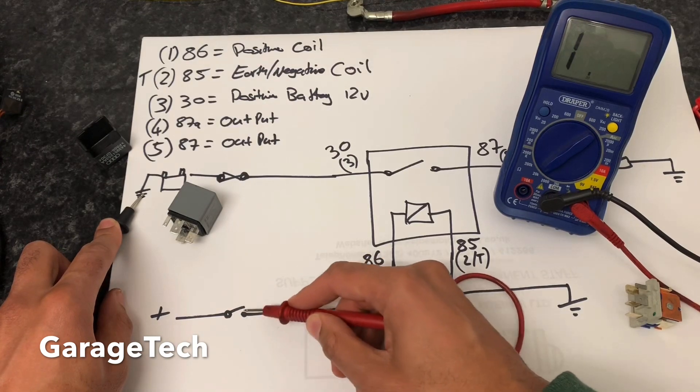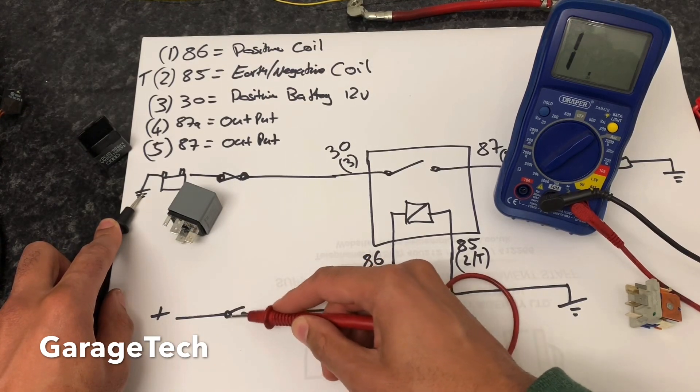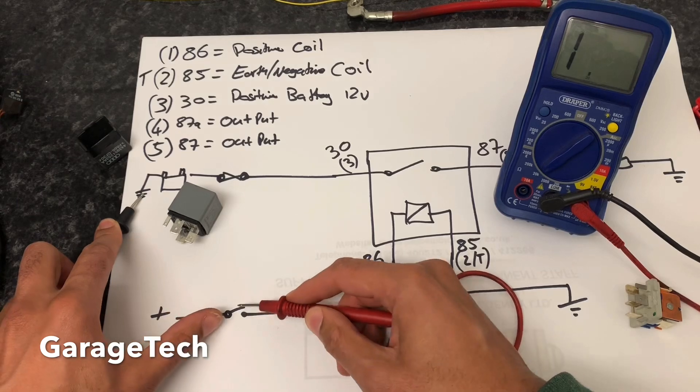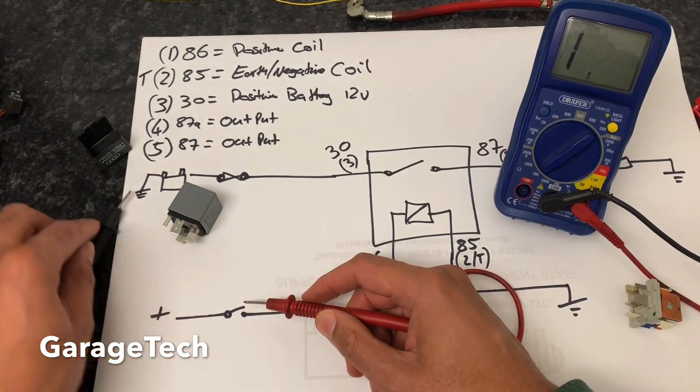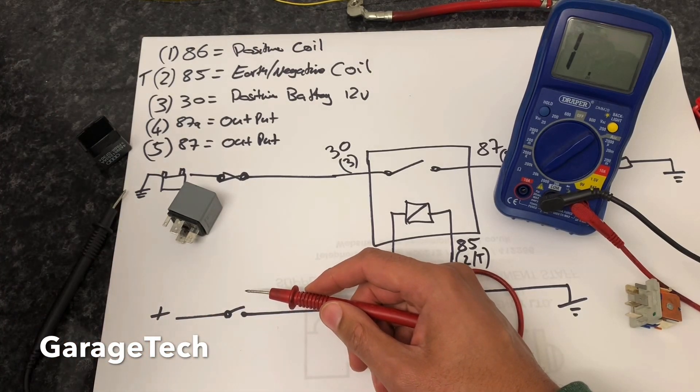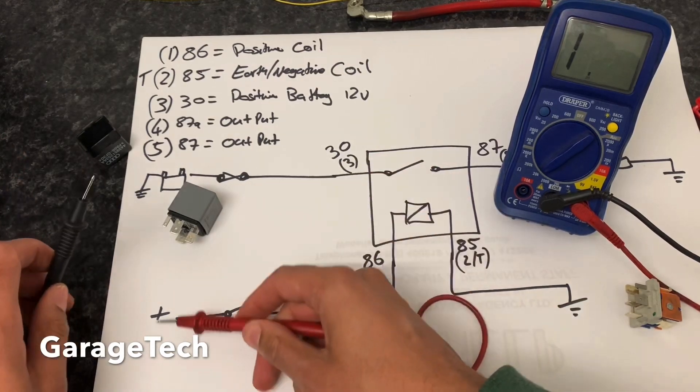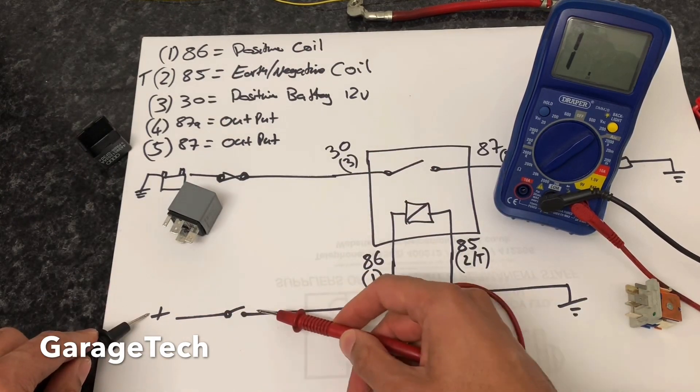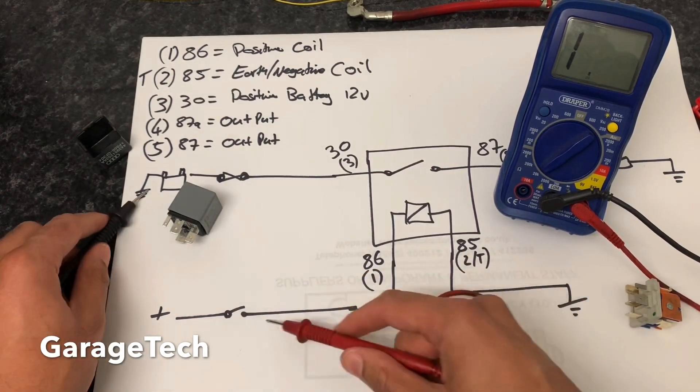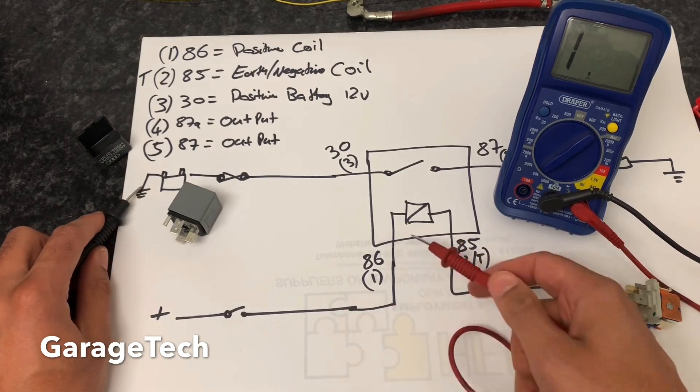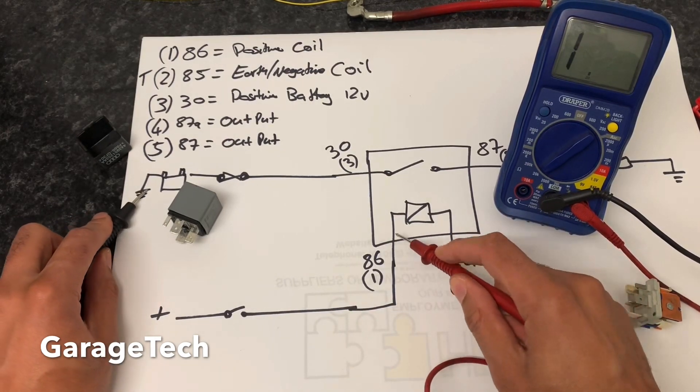Just bear in mind that that switch here that I'm putting out could be a control unit, because it might be that you're pressing a switch somewhere in your car that then goes to your control unit. Your control unit then powers this up, so you really do need to check your wiring diagrams before you start going down that route.